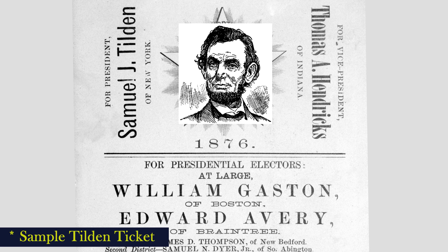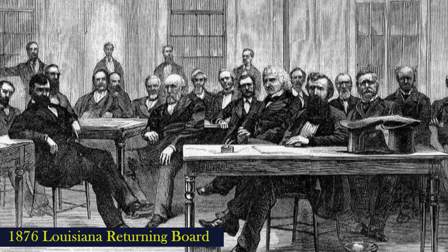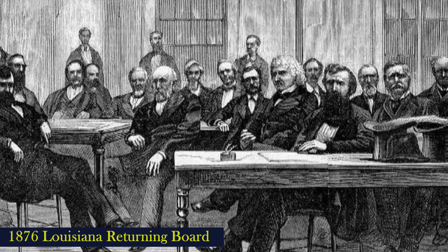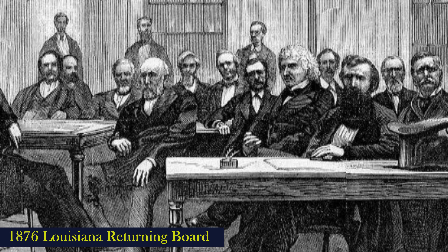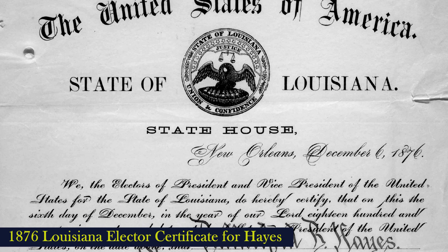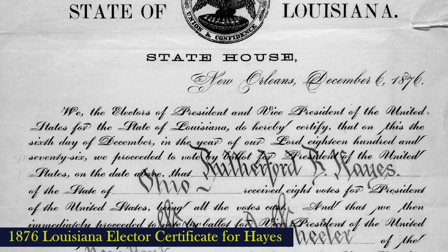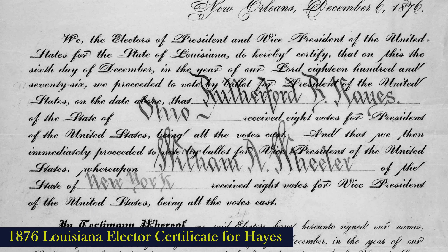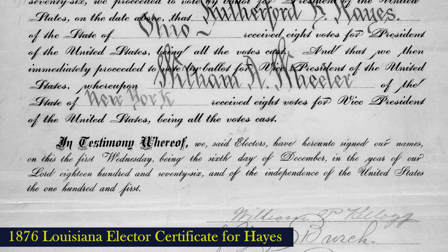Both Republicans and Democrats rushed into these three states to watch and try to influence the counting of the votes. The returning boards determined which votes to count and which votes to throw out if they deemed them fraudulent. One of the points of contention revolved around the design of the ballots. At the time, parties would print ballots, or tickets, to enable voters to support them in the open ballots. To aid illiterate voters, the parties would print symbols on the tickets, and in this election, many Democratic ballots were printed with the Republican symbol of Abraham Lincoln on them. The returning boards in all three states argued that fraud, intimidation, and violence in certain districts invalidated votes, and they threw out enough Democratic votes for Hayes to win. All three returning boards awarded their state's electoral votes to Hayes.